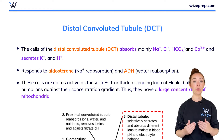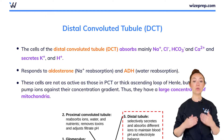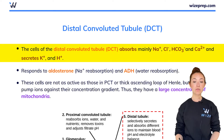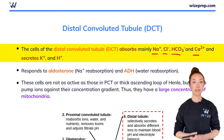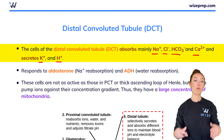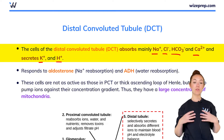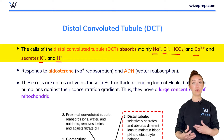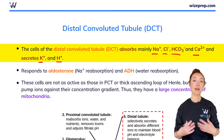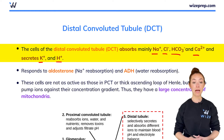From the loop of Henle, the filtrate goes into the distal convoluted tubule, or DCT. The cells of the DCT absorb mainly sodium, chloride, bicarb, and calcium ions, and it also secretes potassium and protons. You don't need to memorize all of those — just know that there's some absorption going on, especially more sodium being reabsorbed, and then there's secretion of protons and potassium.